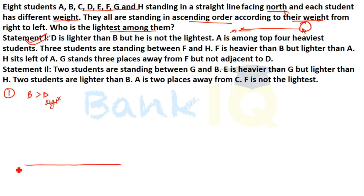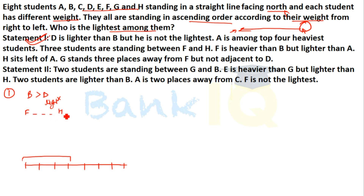You have a total of 8 persons — positions 1 through 8. A is among the top 4 heaviest, so A is in positions 1 to 4. Three students sit between F and H. F is heavier than B but lighter than A. H sits to the left of A.